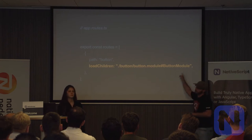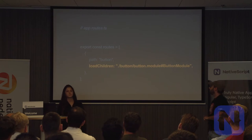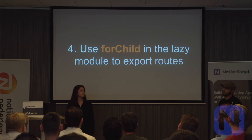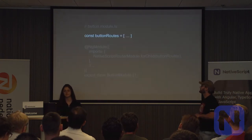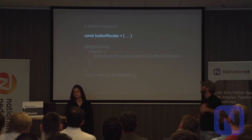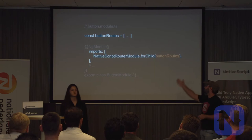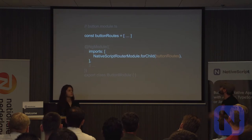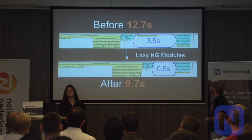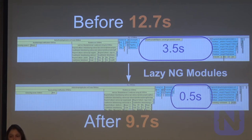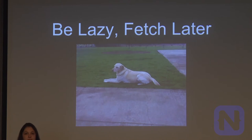Instead of using 'children' for the button routes, we use 'loadChildren' and pass a string specifying where the module is actually located inside the application. After the hashtag, we specify the name of the module we'll be lazy loading. The final step is inside the feature module itself — we must provide all the routes using the 'forChild' method of the NativeScript router module. The result is almost three seconds faster startup time. The moral of the story: be lazy and load the modules later, and do it from the start to save yourself the refactoring.